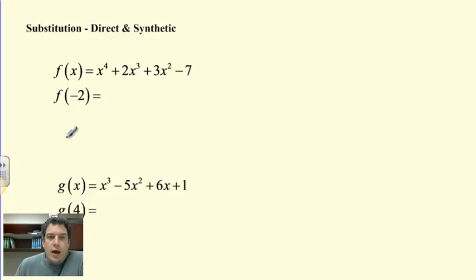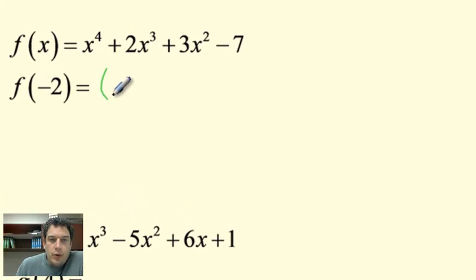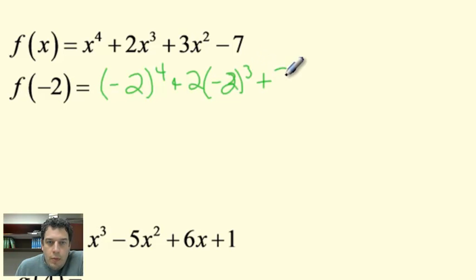So let's try f of negative 2. Most of you could probably do this directly by substituting in the negative 2. Say negative 2 to the 4th plus 2 times negative 2 to the 3rd plus 3 times negative 2 squared minus 7. We follow order of operations, so the first thing we're going to do is exponents. Negative 2 to the 4th is 16.